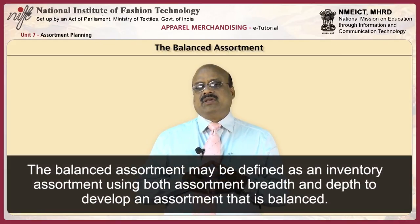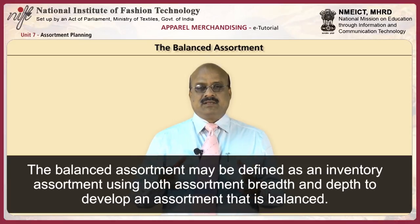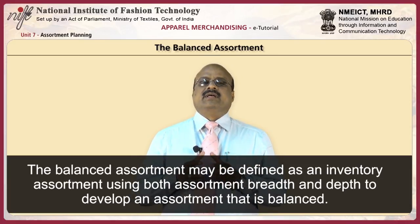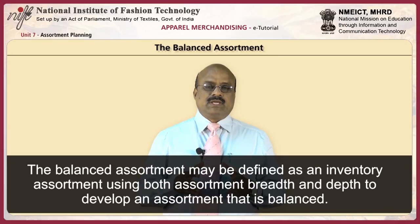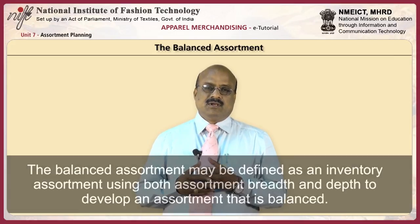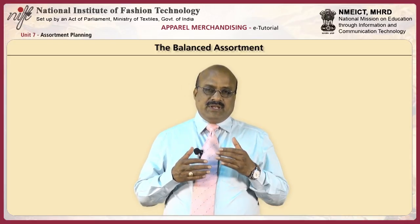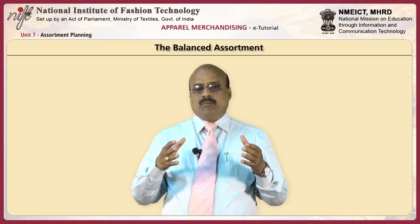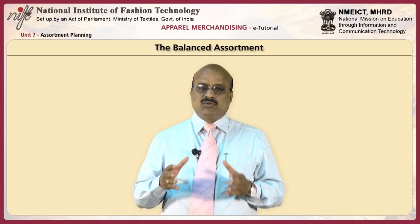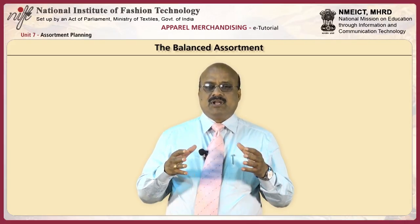The balanced assortment may be defined as an inventory assortment using both breadth and depth to develop a balanced assortment. For example, broad assortments are used early in the season when new styles are still being tested for consumer acceptance, while narrow and deep assortments are used later in the season when demand is clearly defined. A balanced assortment may be used by mass merchandisers as well as by stores with a high fashion image — it may be considered a normal compromise. Breadth and depth comprise a retailer's product mix, defined as all the products and services offered for sale.